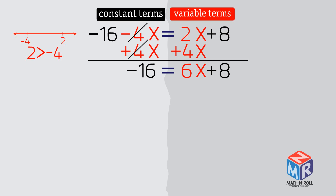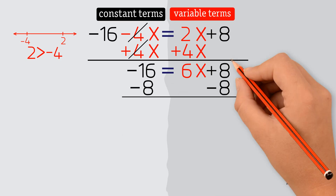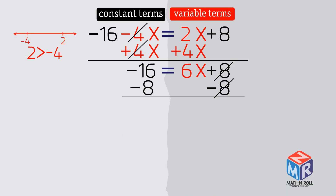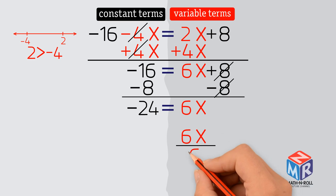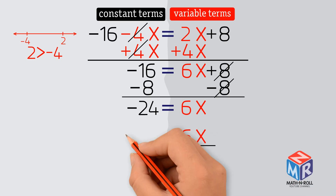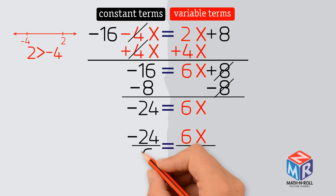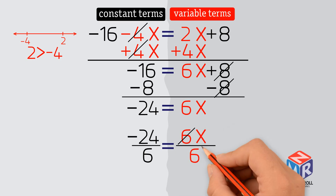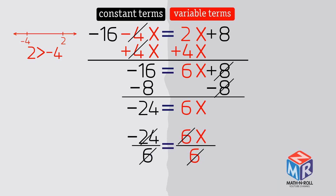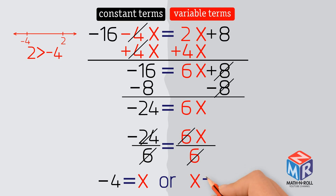We have a constant, 8, on the variable side. So we subtract 8 from both sides to get rid of it. The last step to get x alone, we divide both sides by 6. Negative 4 equals x, or x equals negative 4.